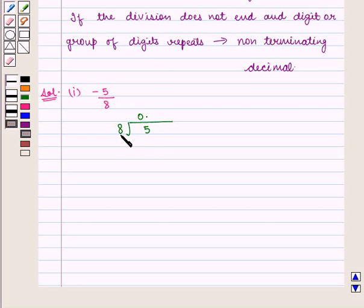Now 5 is smaller than 8. So we put a decimal in the quotient so that we can put 0 with 5. Then 50 is greater than 8, and 8 into 6 is 48. And we get the remainder as 2, which is again smaller than 8.